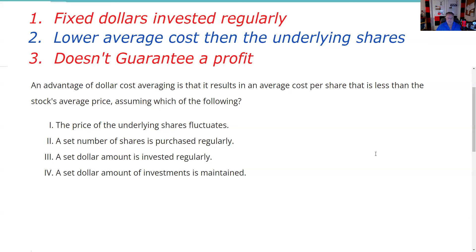A set number of shares is purchased regularly — no. My example: you're giving me $100 a month to put in that mutual fund, and depending on the NAV will depend on how many shares you're getting. So two is false. A set dollar amount is invested regularly — that is true. So one and three are true, and the answer here is one and three.